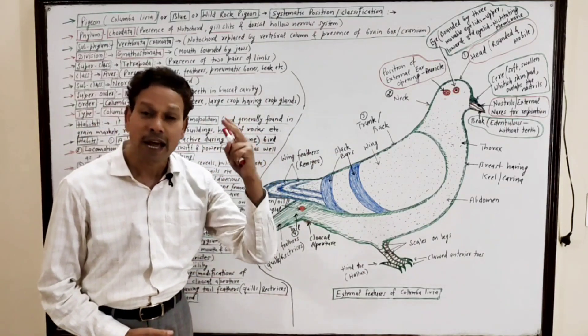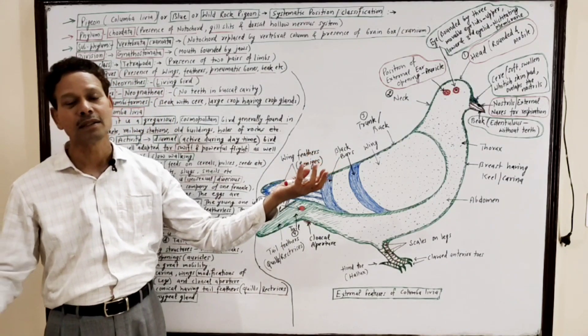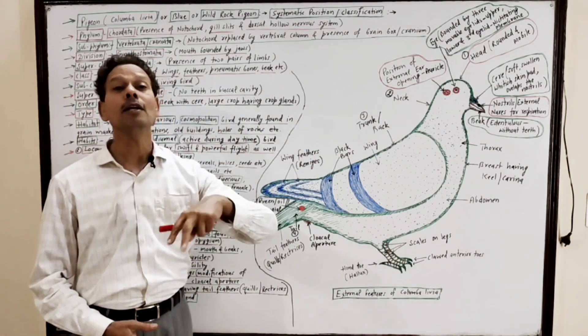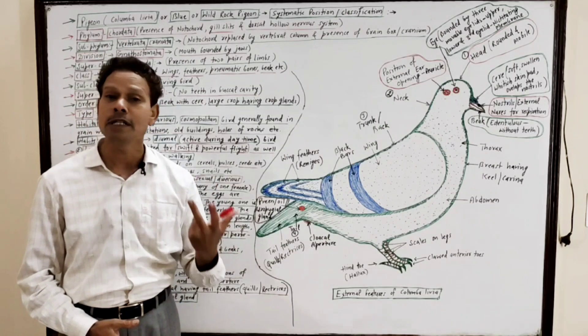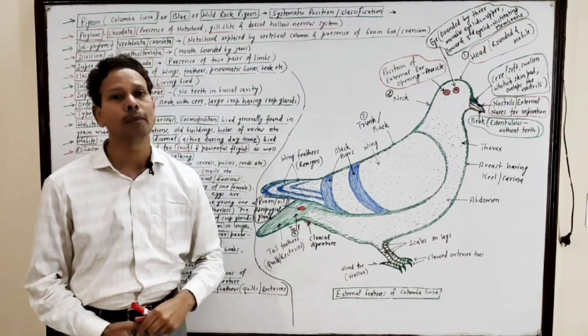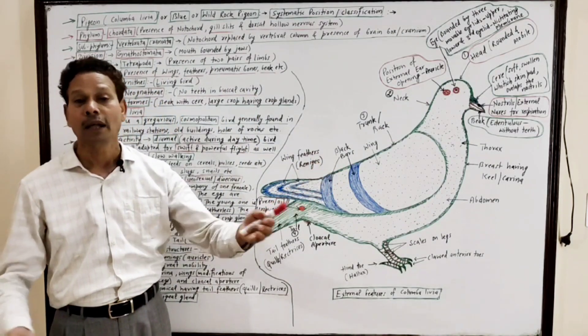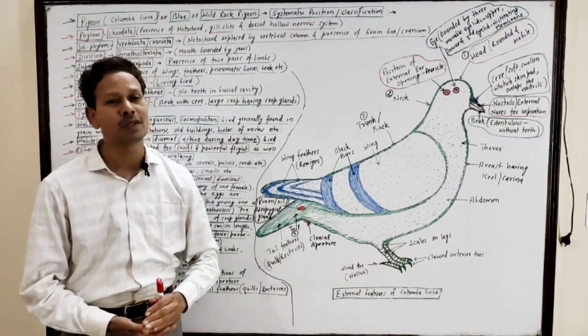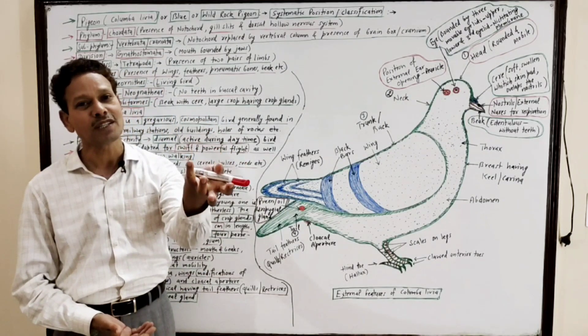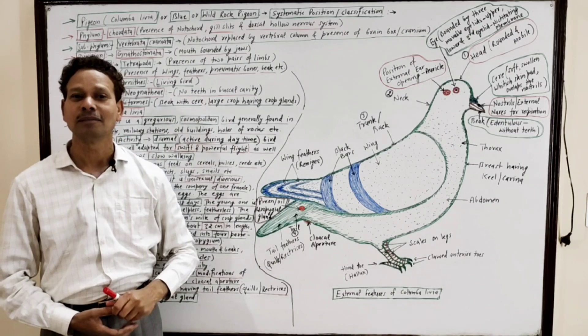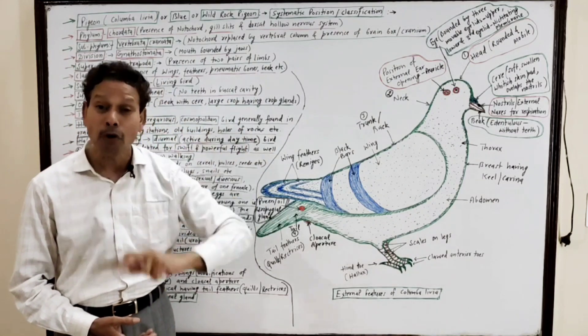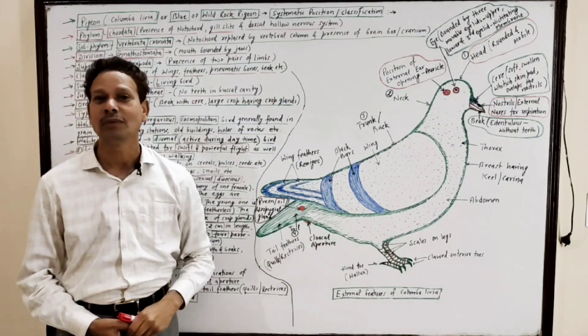The young ones are nourished by both parents because in their alimentary canal, crop is present, in that crop, crop glands are there, and the crop glands produce highly nutritious pigeon milk that is provided by both parents to the young ones.